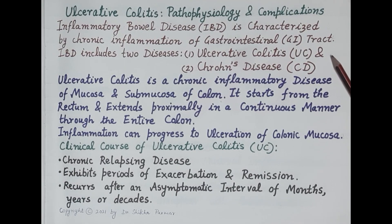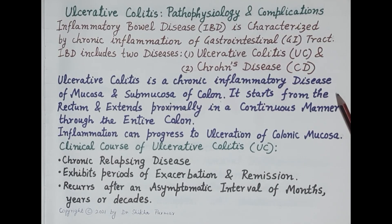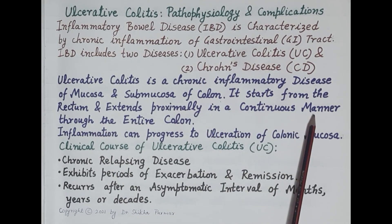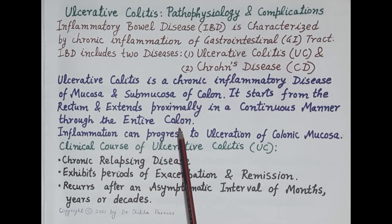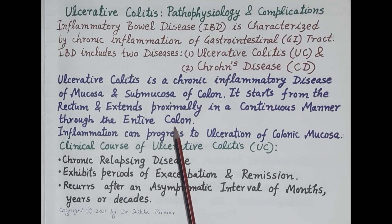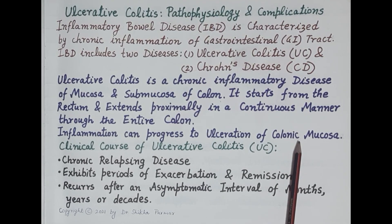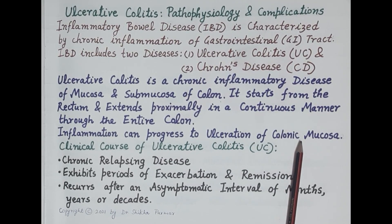Ulcerative colitis is a chronic inflammatory disease of the mucosa and submucosa of the colon — the large intestine. The disease starts from the rectum; inflammation begins there and extends proximally in a continuous manner, spreading throughout the entire colon over time. Inflammation can further progress to ulceration of the colonic mucosa and submucosa — that is why the disease is termed ulcerative colitis.